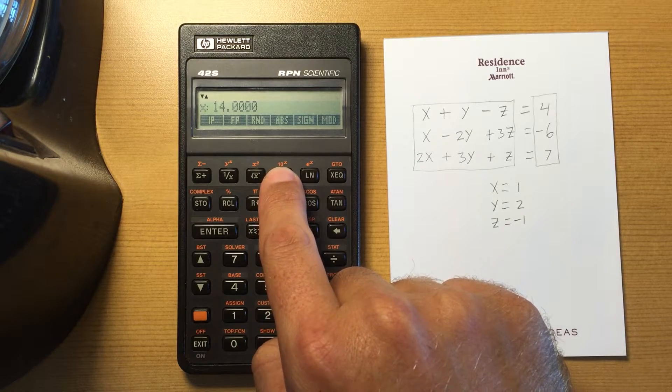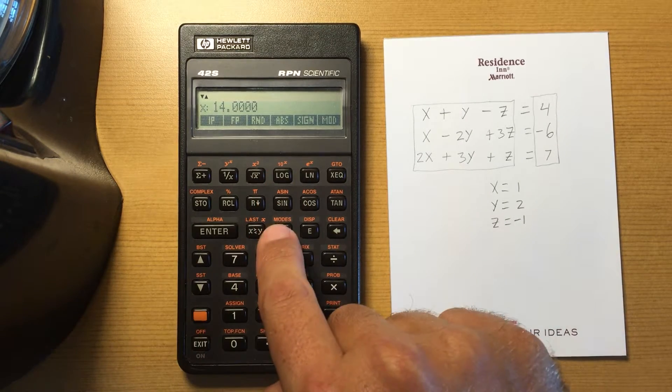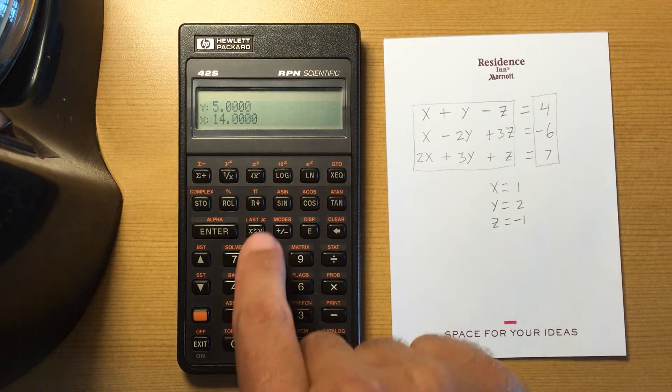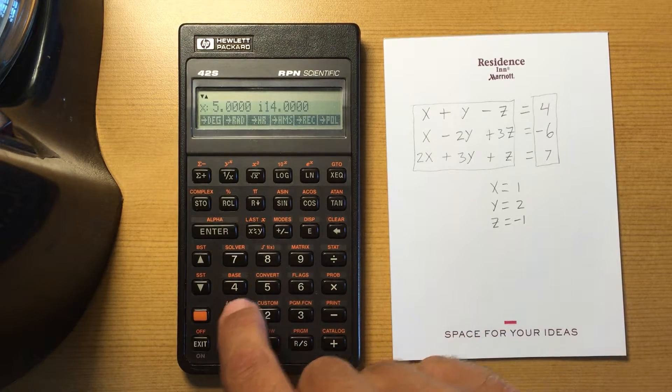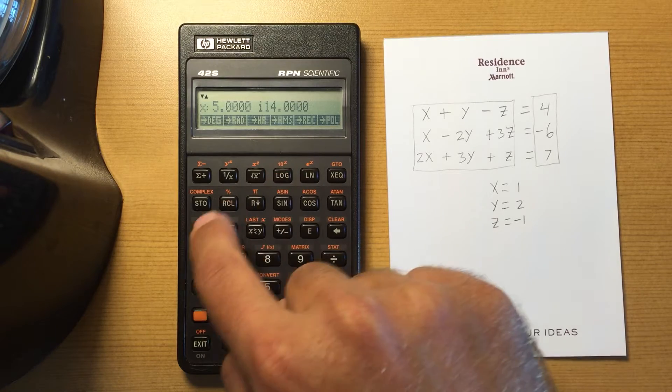Or if I change my mode to rectangular, let's change that into a complex number and take the absolute of that. I get 14.866.